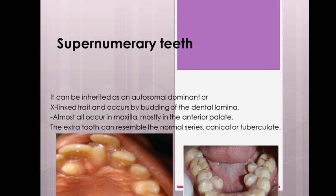Supernumerary teeth can be inherited as an autosomal dominant or an X-linked trait, and occurs by budding of the dental lamina. The extra tooth can resemble a normal tooth, or it could be conical in shape or tuberculate. Almost all — 98 percent — occur in the maxilla, mostly in the anterior palate.